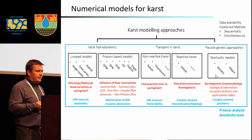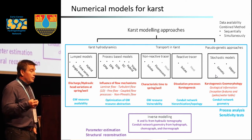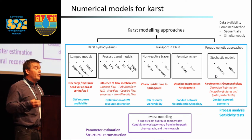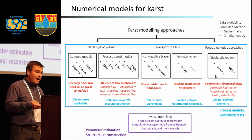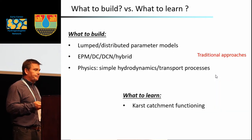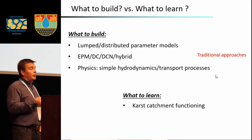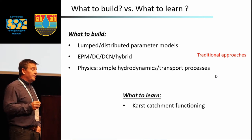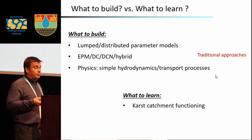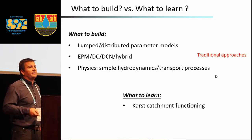With all these types of models we can also perform inverse modeling. With inverse modeling, we can get information about hydrodynamic parameters from, for example, hydrodynamic tomography or the analysis of hydrographs, thermographs, and chemographs at springs. There are traditional approaches with lumped or distributed parameter models: equivalent porous medium, dual continuum, dual-conducting network, and hybrids. The physics is simple in terms of hydrodynamics and transport, and what we learn is information about the functioning of the system at the karst catchment scale.